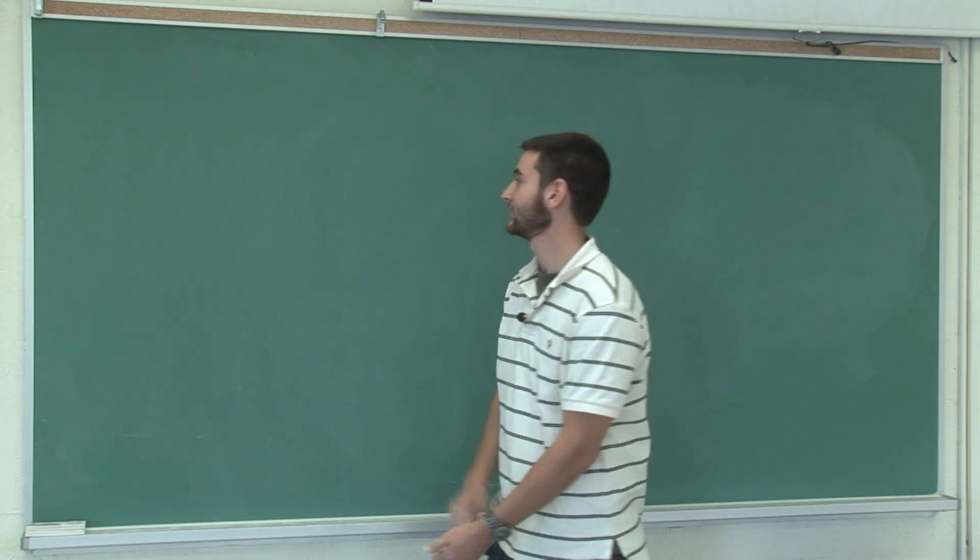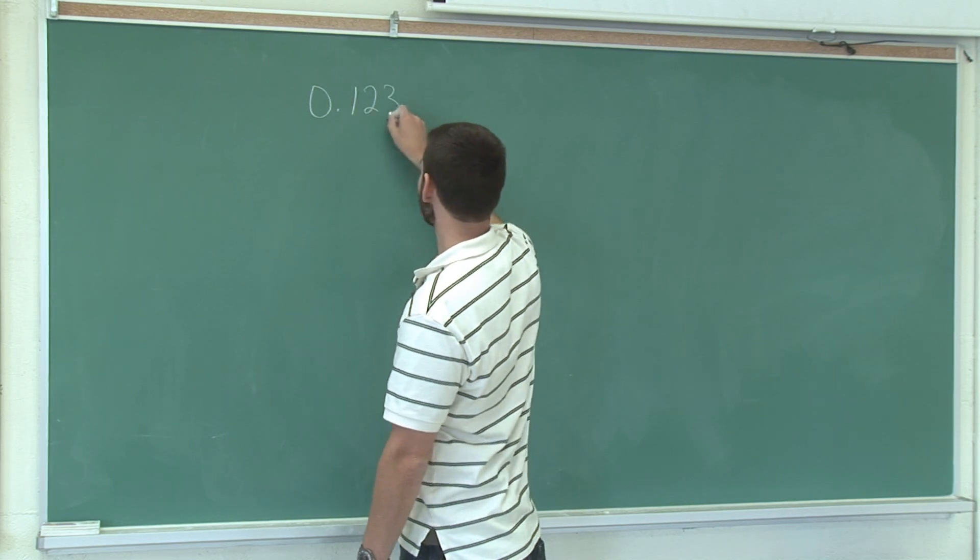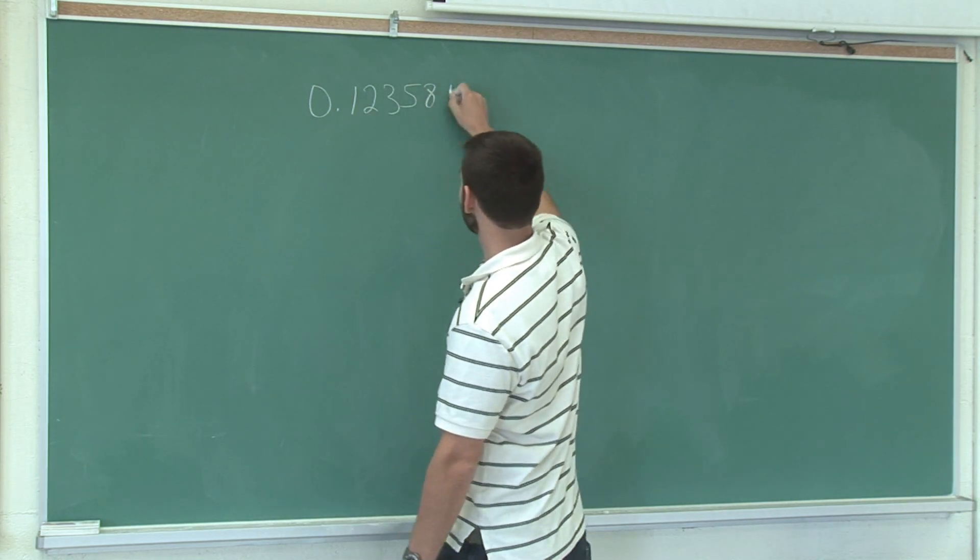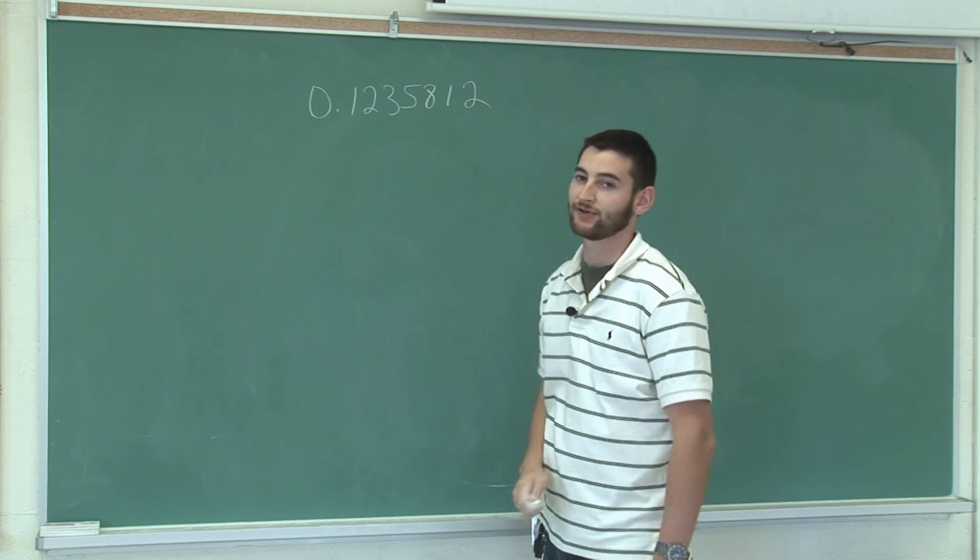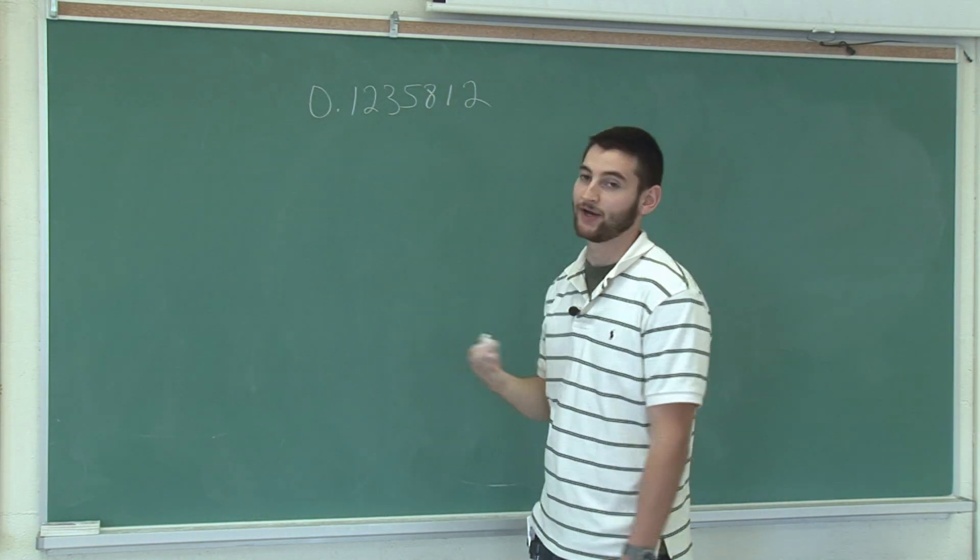Now I'm going to talk to you a little about rounding decimals. Let's take the decimal 0.1235812. Now this decimal can be rounded in many different ways, depending on the level of accuracy you want in your end result.